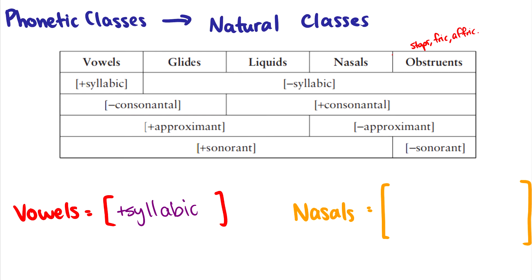What about consonantal? A sound is plus consonantal if there's constriction in the vocal tract. Liquids like /l/ and /r/ — there's constriction there. Nasals very clearly — air doesn't go through the vocal tract at all, it goes through the nasal cavity, so there's an obstruction there. Obstruents — stops, fricatives, affricates — are either very tightly constricted or closed completely, and that is an obstruction. So if there is an obstruction, it is plus consonantal. If there's no obstruction, such as in /i/ or /j/, then it's minus consonantal.